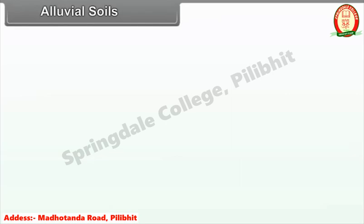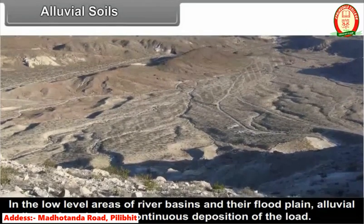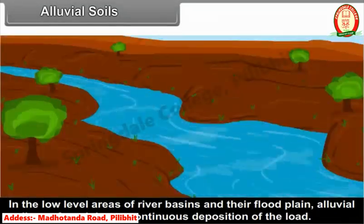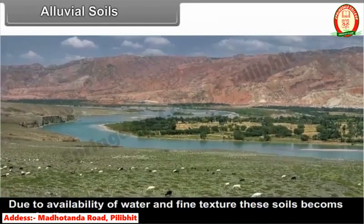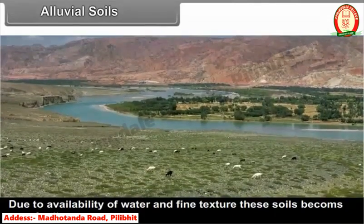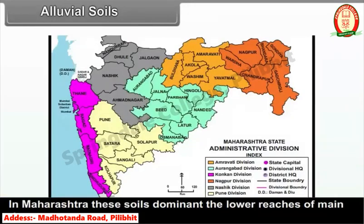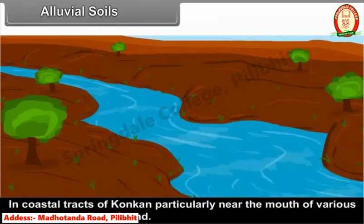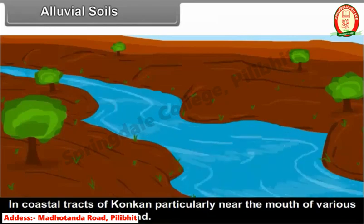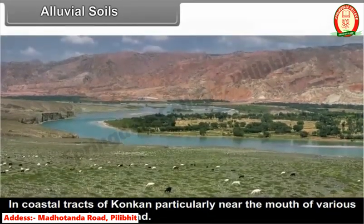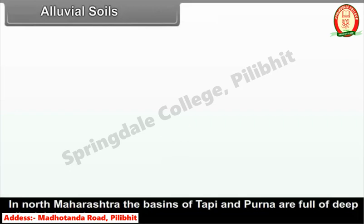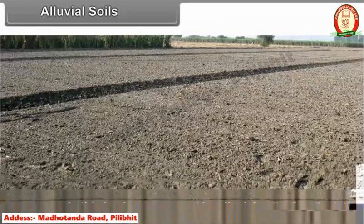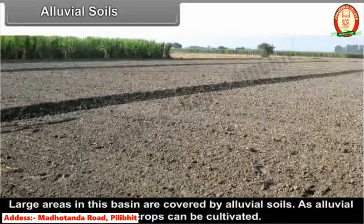In the low-level areas of river basins and their flood plains, alluvial soils are found due to continuous deposition of load. Due to availability of water and fine texture, these soils become very fertile. In Maharashtra, these soils dominate the lower reaches of main rivers. In coastal tracts of Konkan, particularly near the mouth of various rivers, these soils are found. In North Maharashtra, the basins of Tapi and Purna are full of deep alluvial deposits.